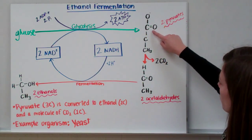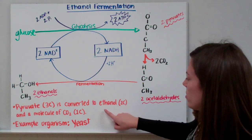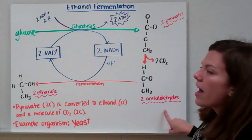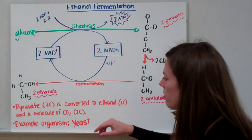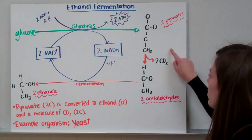Remember, pyruvate has three carbons, one, two, three, and we're converting it to ethanol. So first we had to change it to acetaldehyde, but then we change it to ethanol. And we also make a molecule of carbon dioxide.